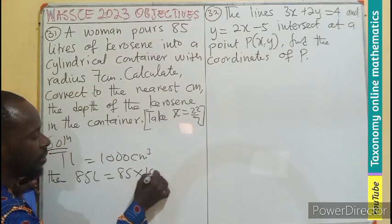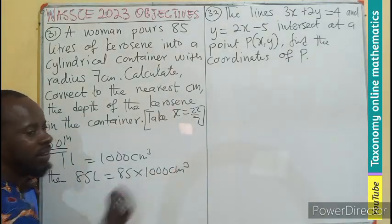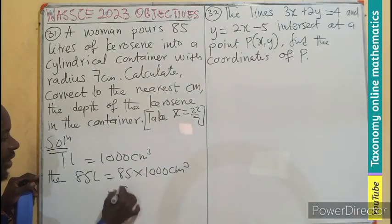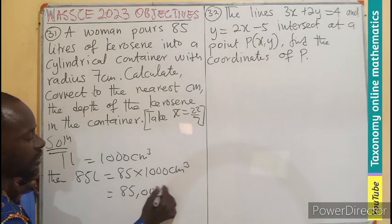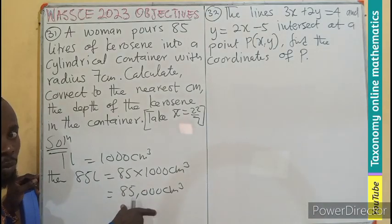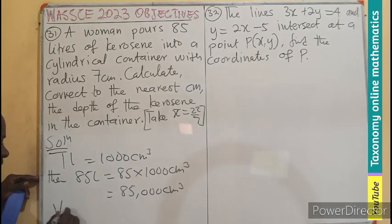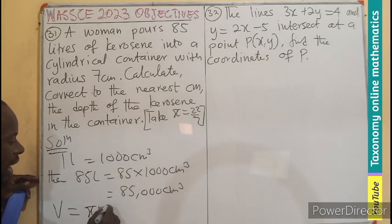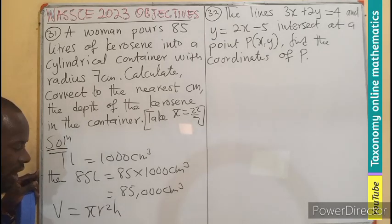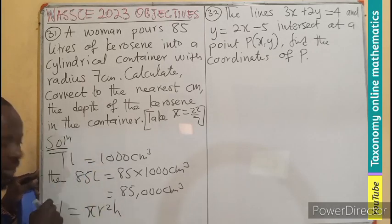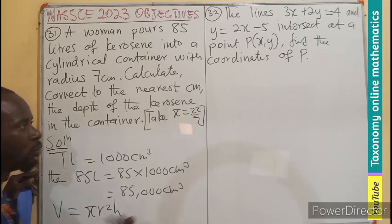So 85 will multiply 1,000 cm³ and that will give us 85,000 cm³. That becomes the volume. And we know volume of a cylinder is given by πr²h, where h is the depth of the kerosene. So per substitution, what do we do?